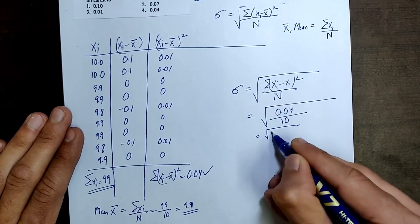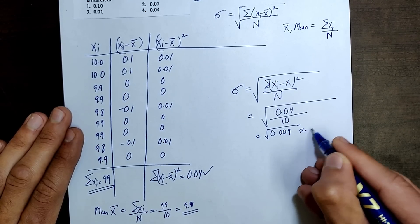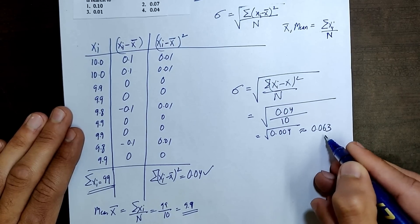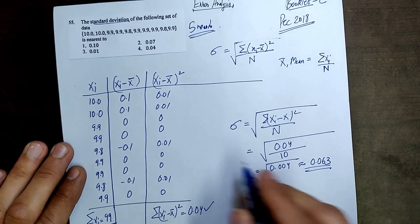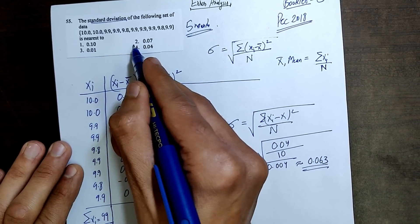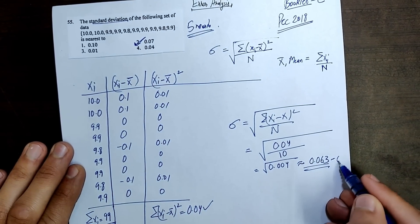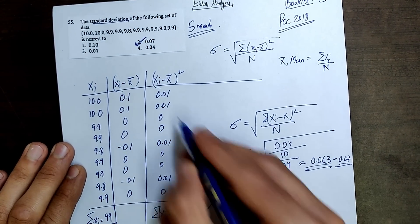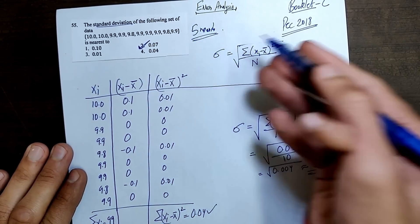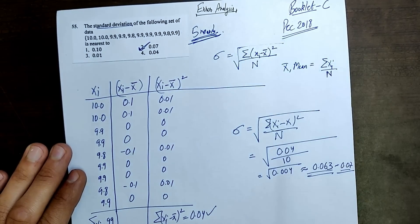This result is close to the second option, 0.07. It is very close to 0.07, so the correct option is the second one, 0.07. This is a very easy question and it will easily give us 5 marks. Thank you.